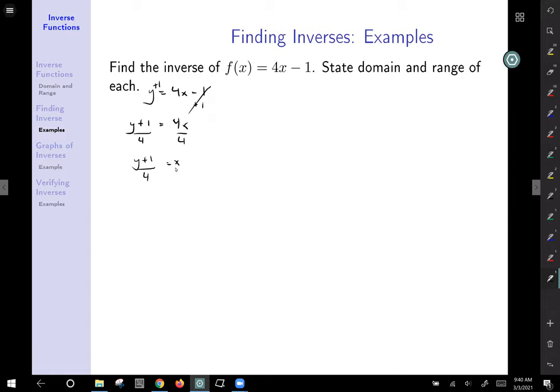Now we want all of our functions to be in terms of x, so it's our favorite variable. So now we switch x and y. And so we have x plus 1 over 4 equals y. And you label your resulting function as x plus 1 over 4 is the inverse. It reverses the relationship of the related original function of f of x equals 4x minus 1.